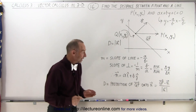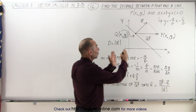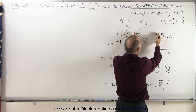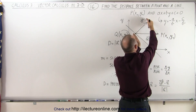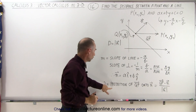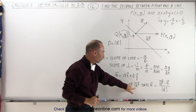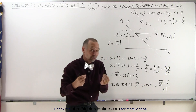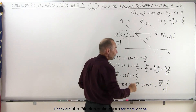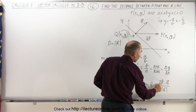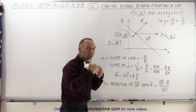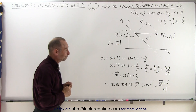We can see that the distance D is the projection of the vector QP onto the normal vector N. So D is the projection of QP onto N, which, as we saw in the previous video, is defined as the dot product between the two vectors divided by the magnitude of the vector onto which we're projecting.